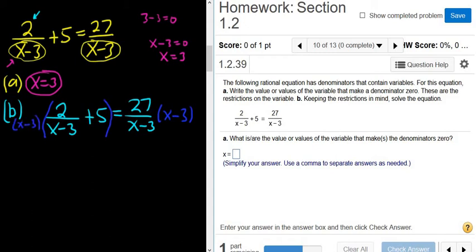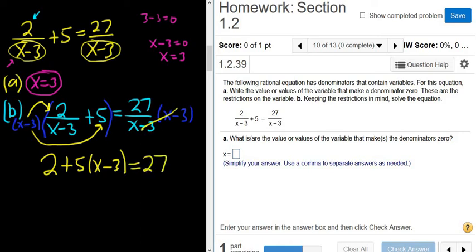And now we'll carefully distribute. So x minus 3 times this—well, the x minus 3s will cancel, so you'll just get 2. Then we do x minus 3 times this, so that'll be plus 5 times x minus 3. And these cancel, so we get 27.